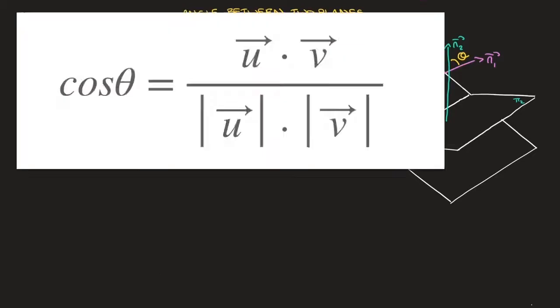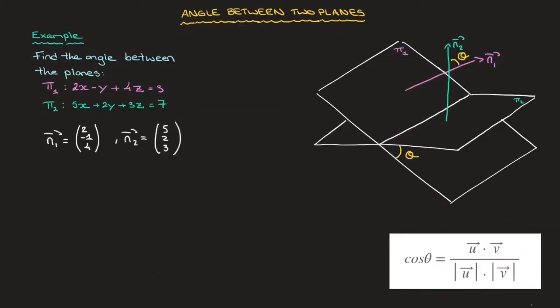Now that that's done, we use the formula for calculating the angle between two vectors. That's the formula we see in the lower right-hand corner of the screen here.